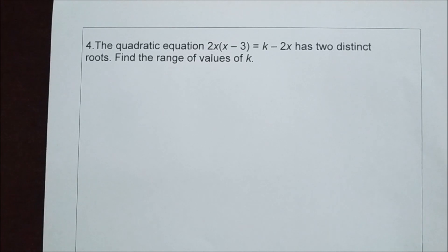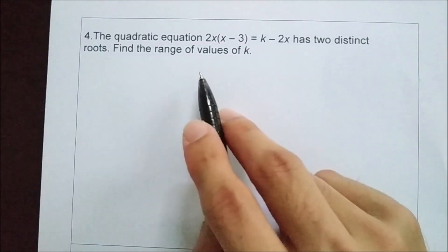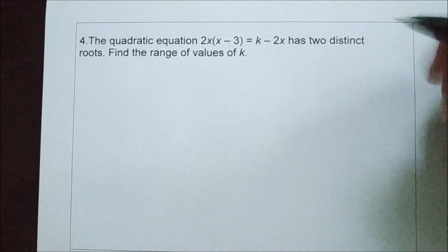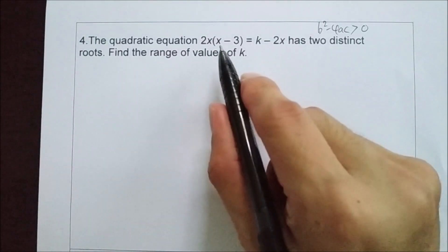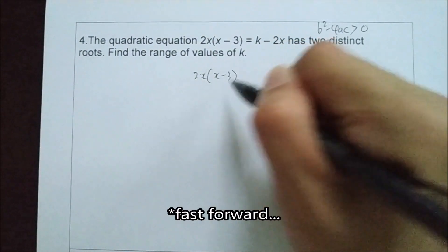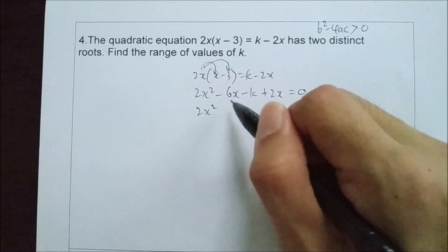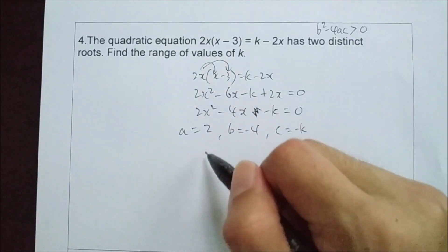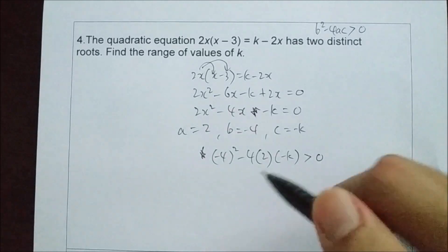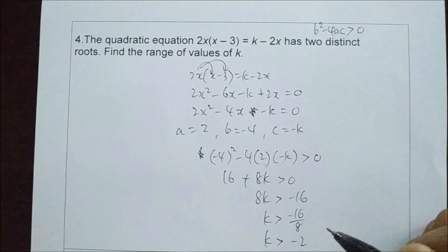Question number 4: The quadratic equation 2x times (x minus 3) equals k minus 2x has two distinct roots. Distinct here means two different roots. Find the range of values of k. Two distinct or two different roots implies b squared minus 4ac is more than 0. First, rewrite this in general form, then substitute into the discriminant. We get k is greater than negative 2.